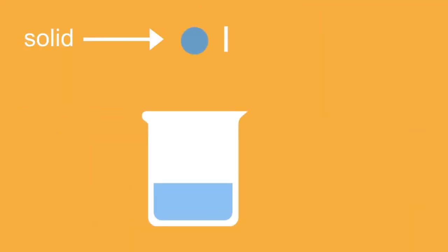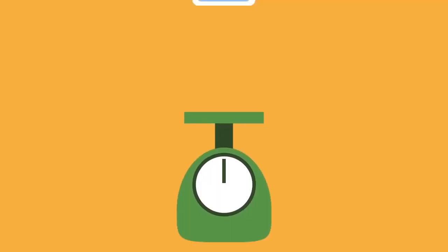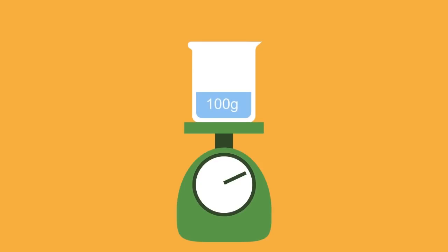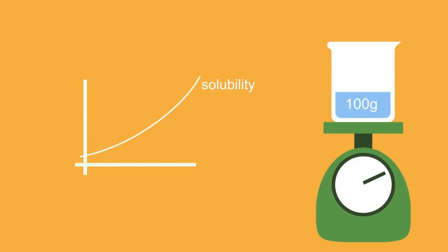This observation is only applicable to a solid dissolving in a liquid. We can measure how much of a given salt can dissolve in 100 grams of water at a certain temperature, and plot solubility as a function of temperature to give a solubility curve.